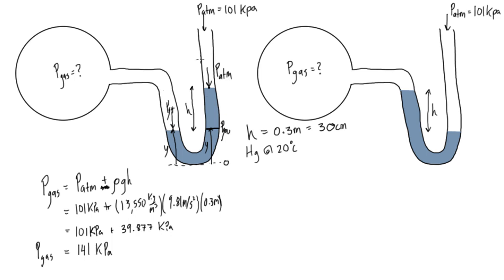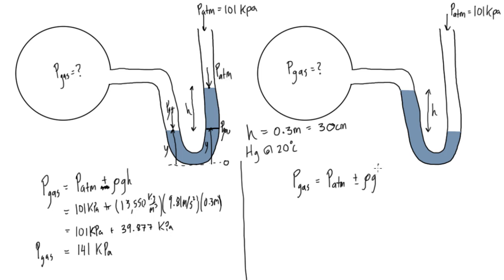That makes sense: 141 kPa is pushing down on the gas side, 101 kPa on the open side, so the gas side is stronger and forces the open side up. Now for the second case: by observation, P_atmosphere is pushing down and forcing the gas side up, so intuitively P_atmosphere is stronger than P_gas. Using the same method, P_gas = P_atmosphere ± ρgh, but since P_atm is greater, P_gas must be smaller, so we subtract the ρgh term.